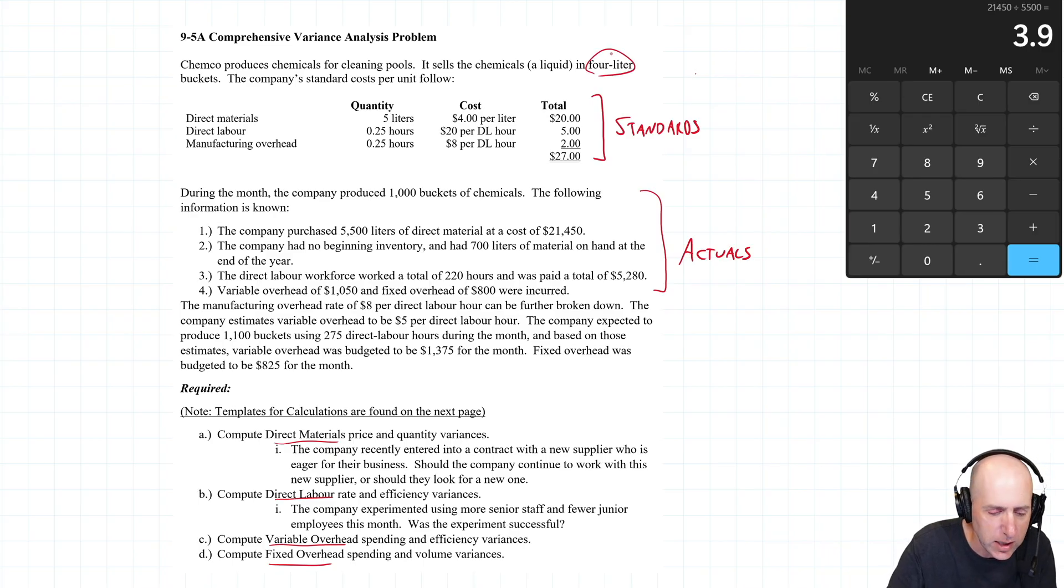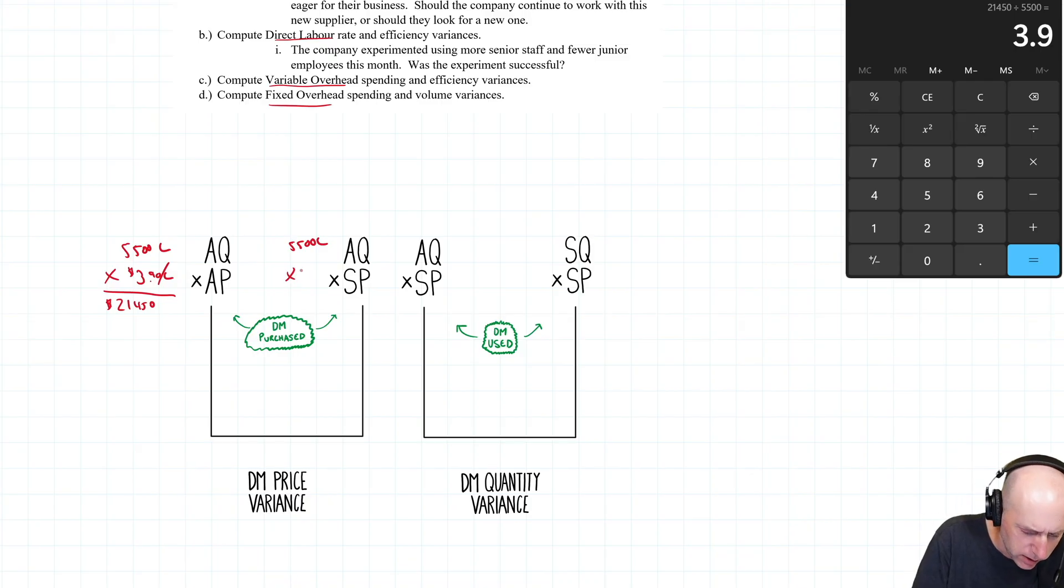Sometimes I do this question in class, students go, well wait, it's a 4 liter bucket and we use 5 liters of material? And yeah, absolutely. You might boil it down, you might sift some of that material out or refine it down. So it's very possible to put in 5 liters and only get 4 liters of good product out. But the cost is $4 per liter. That's our standard price.